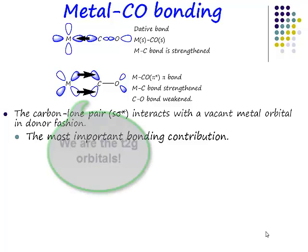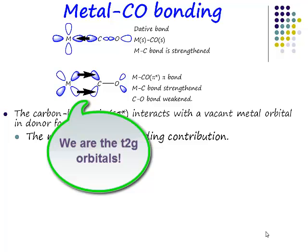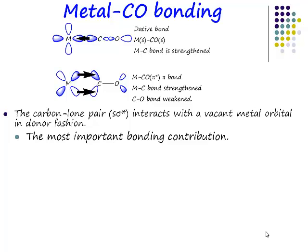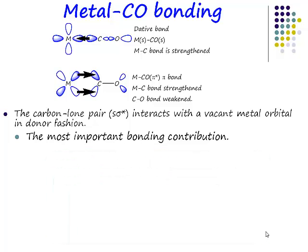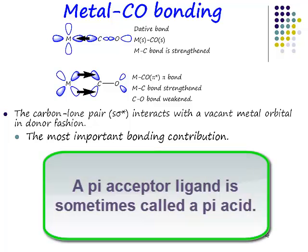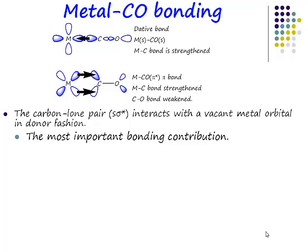In this case, these are the T2G orbitals, and these T2G orbitals are occupied — they are occupied with electrons. However, the π* orbital is not occupied with electron density. This is what's special about carbon monoxide ligands: they can accept electron density from the transition metal into the π* orbitals. That's what's meant by a π acceptor ligand, or sometimes called a π acid.